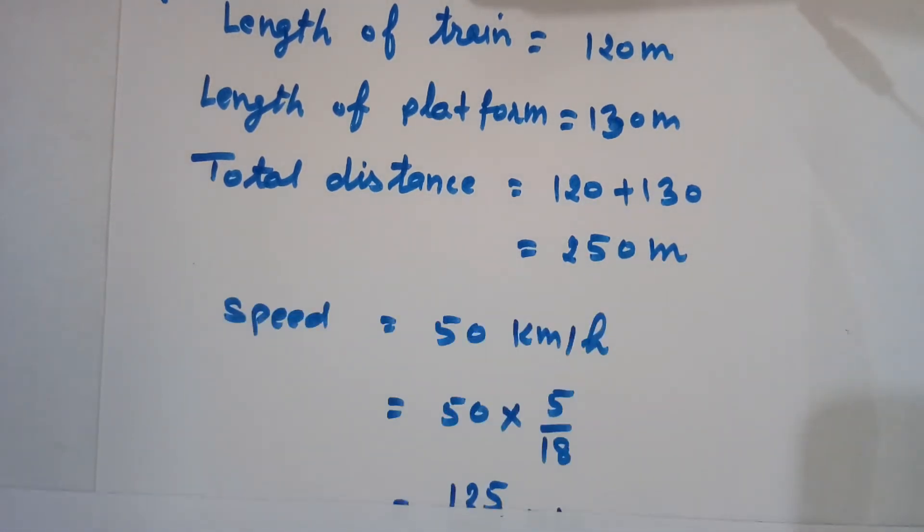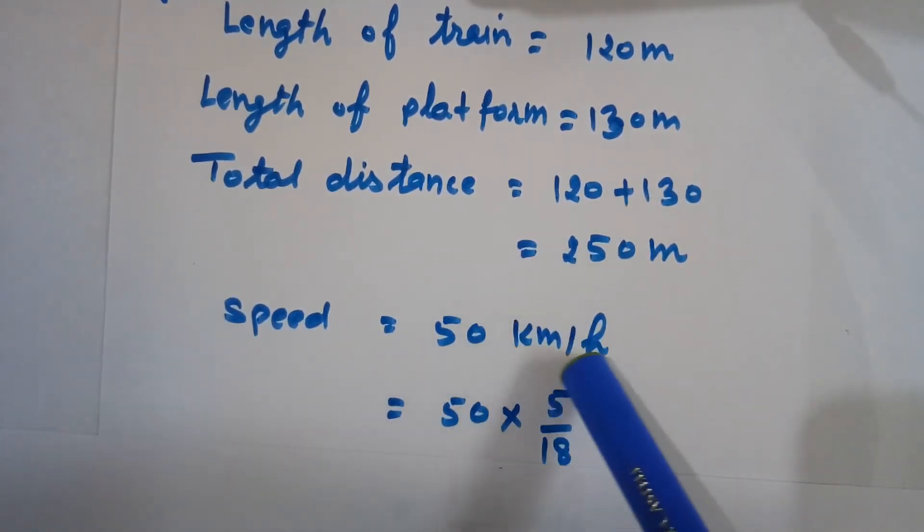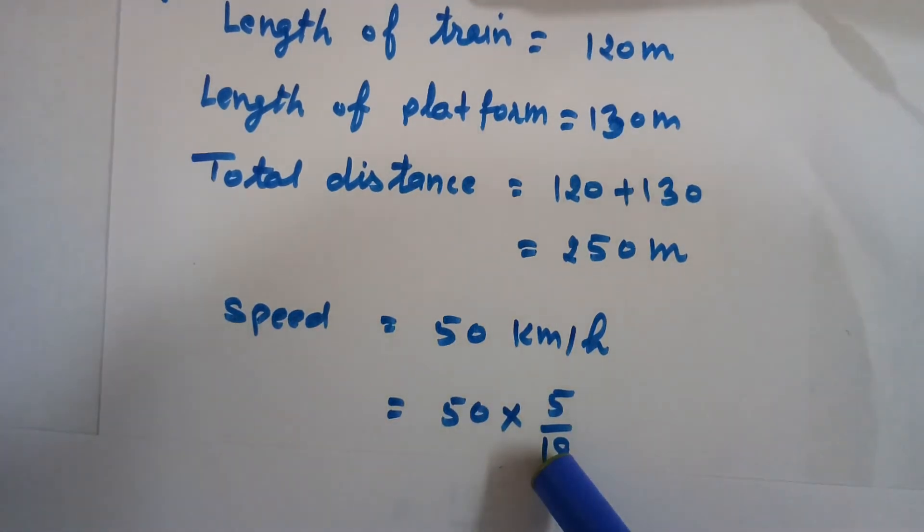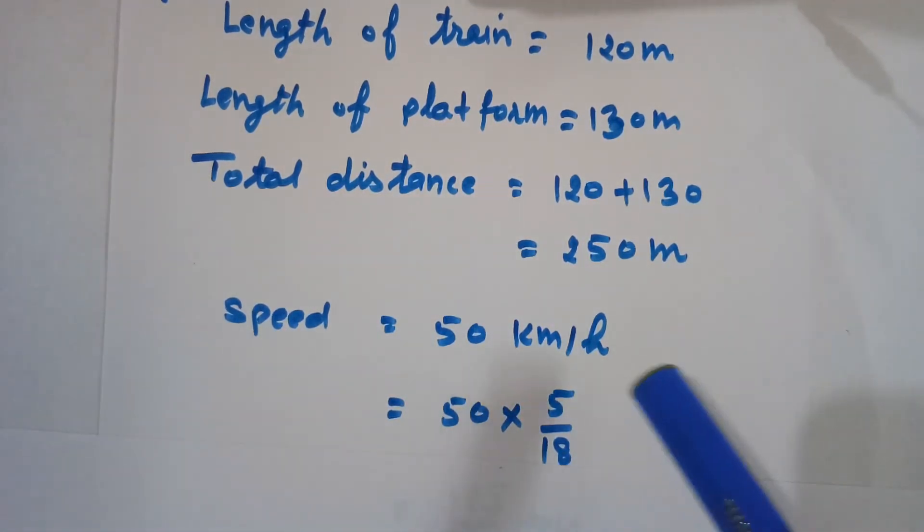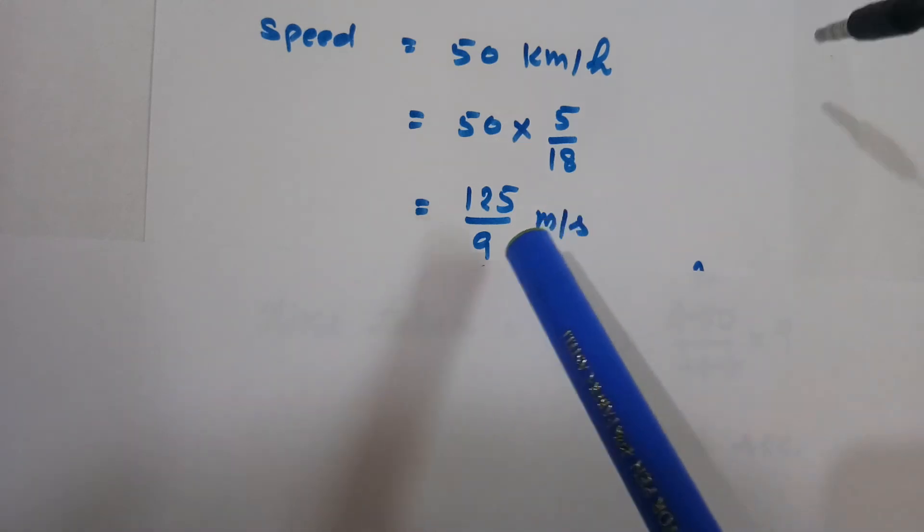The speed of the train is given here as 50 kilometers per hour. Because the distance unit is meters and the speed unit is kilometers per hour, we need to change this into the simpler unit, which is meters per second. So we multiply 50 by 5/18, and after multiplication this becomes 125/9 meters per second.